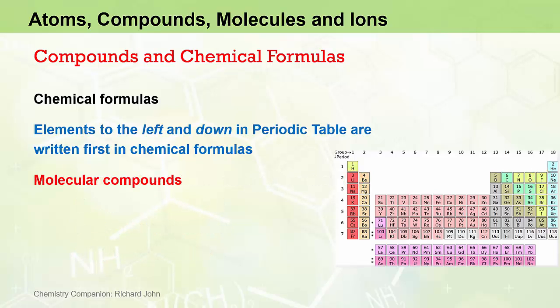For molecular compounds, this general rule of thumb works pretty well in most cases. For example, we can see for carbon dioxide CO2 that carbon lies left of oxygen in the periodic table, and so carbon is written first and oxygen is written second. For hydrogen chloride HCl, we see that hydrogen sits well left of chlorine and so is written first.